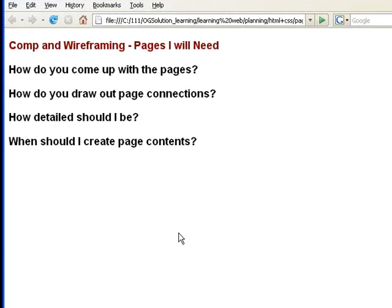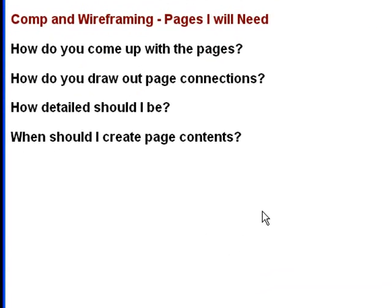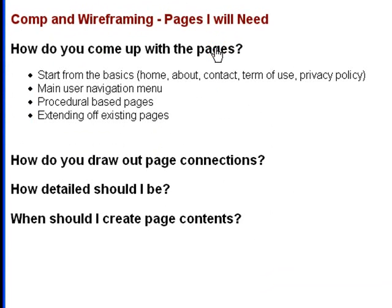So how do you come up with the pages? You can look at the following. First, you can start from the basic pages. For example, home page, about page, contact us page, term of use, and privacy policy are a great set of pages that you usually need on your website.